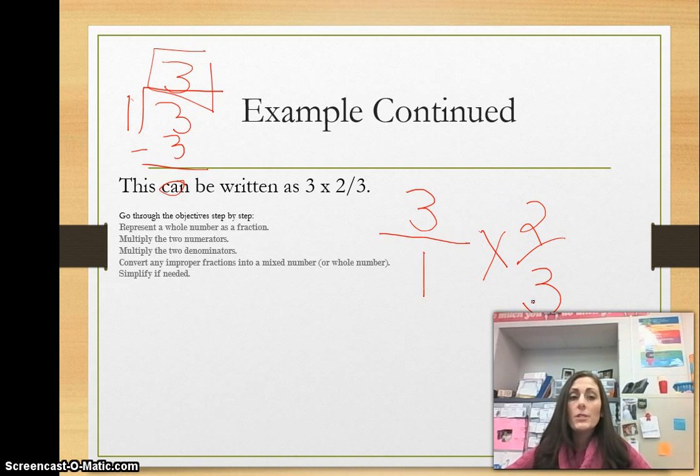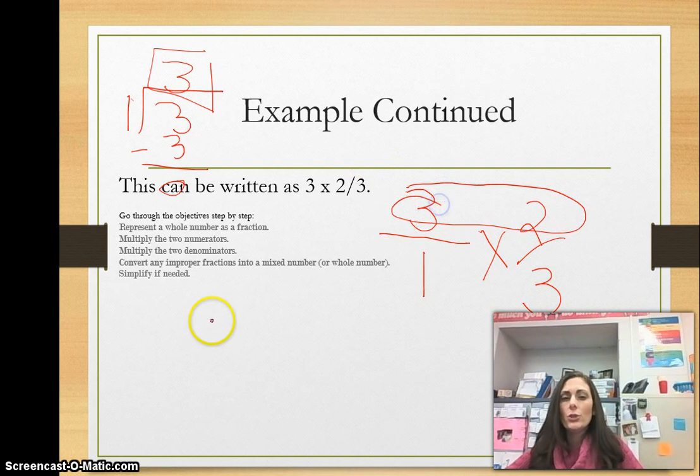The second step is to multiply the two numerators. So now we're going to take three times two, which is six, and then we're going to multiply the denominators. One times three is three.